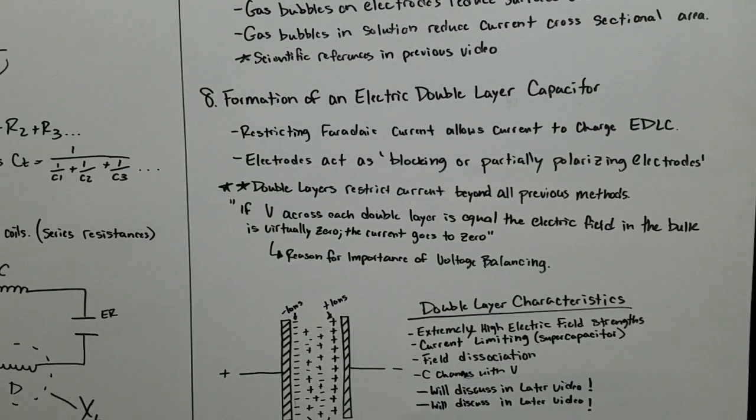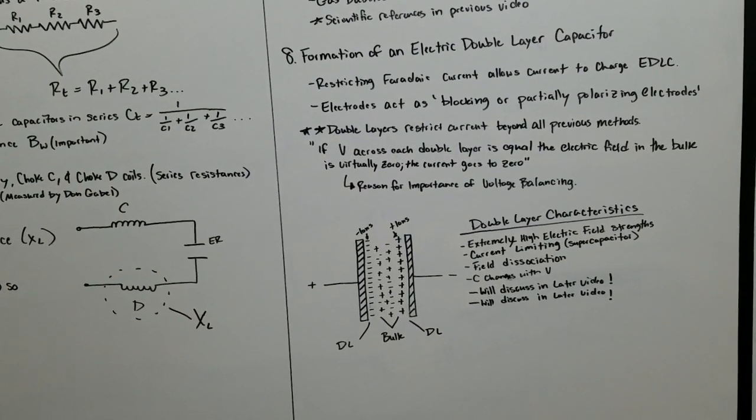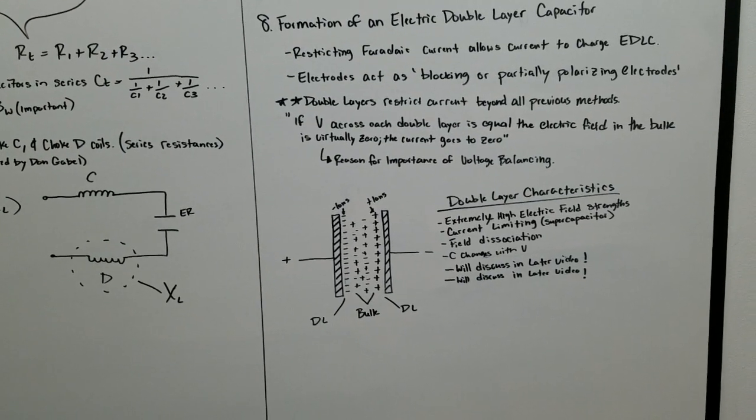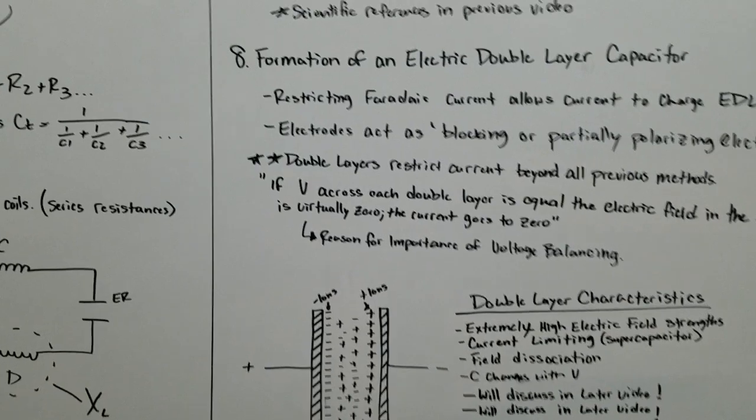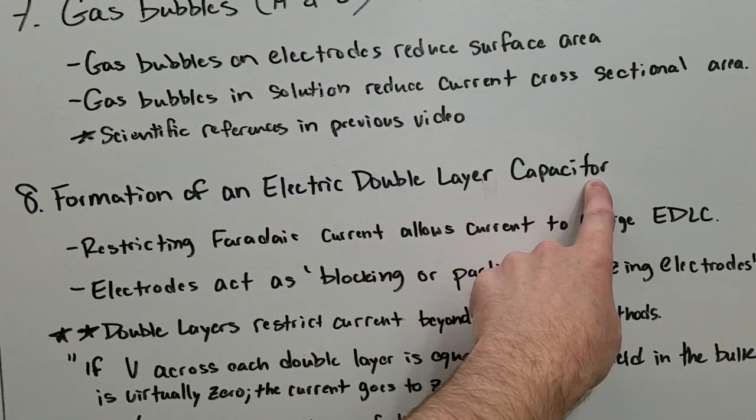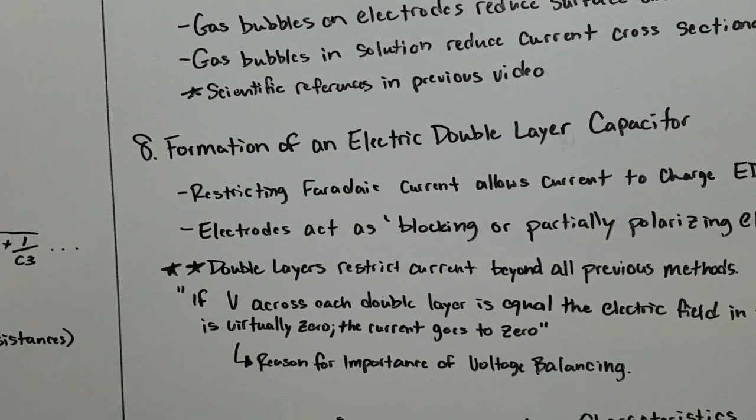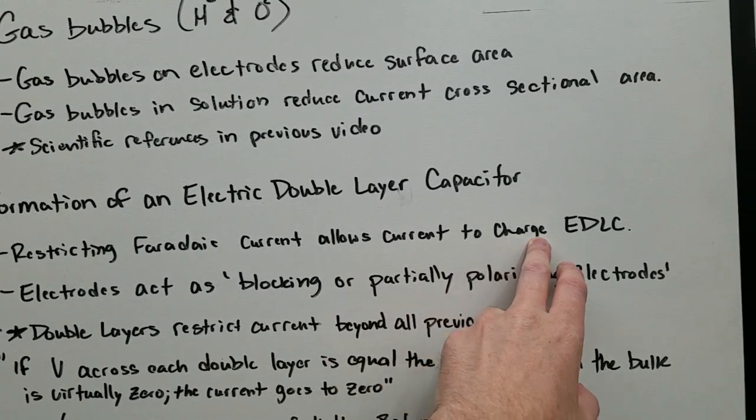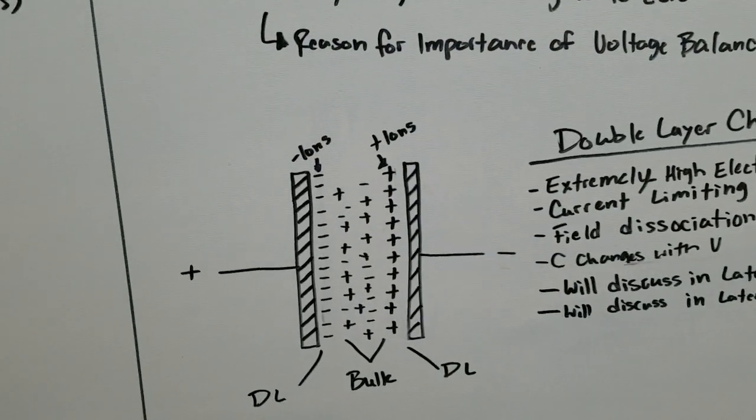Now number eight, this is a very important part of Stan Meyer's work, something that hasn't been talked about much on the forums. But this is one of the solutions to understanding what was occurring in the cell. The formation of an electric double layer capacitor. So when you restrict the Faradaic current, which is the current that feeds electrolysis, the current then charges the electric double layer capacitor.